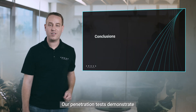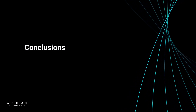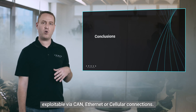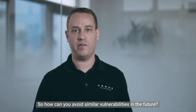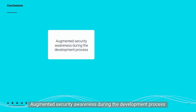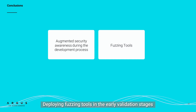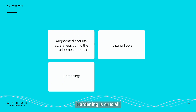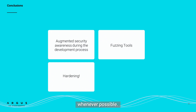Our penetration tests demonstrate that highly severe zero-day vulnerabilities are still common in multiple types of ECUs — some are safety critical. These vulnerabilities are the result of faulty implementations of interfaces and protocols, exploitable via CAN, Ethernet, or cellular connection. So how can you avoid similar vulnerabilities in the future? Here are a few takeaways: augmented security awareness during the development process could help detect at least some of these issues. Deploying fuzzing tools in the early validation stages is an effective way to harvest the low-hanging security fruit. Hardening is crucial — use stack canaries, CFI, properly configured MPUs and ASLR whenever possible.